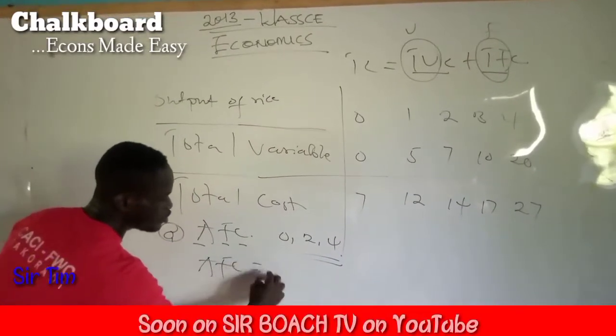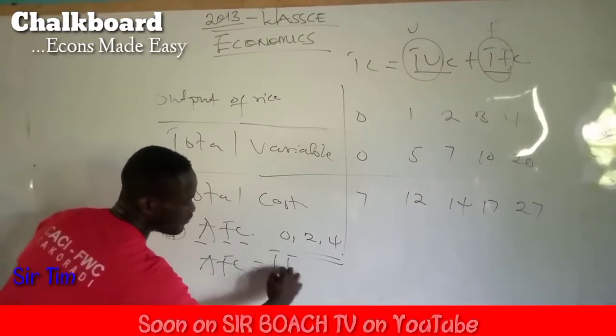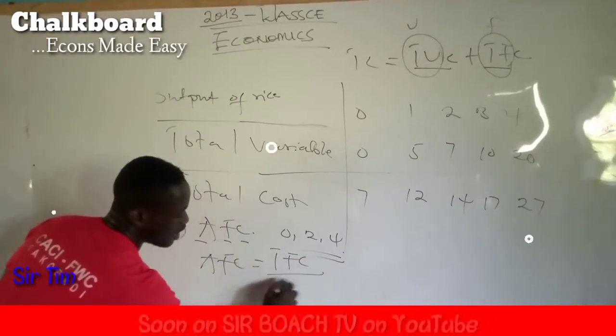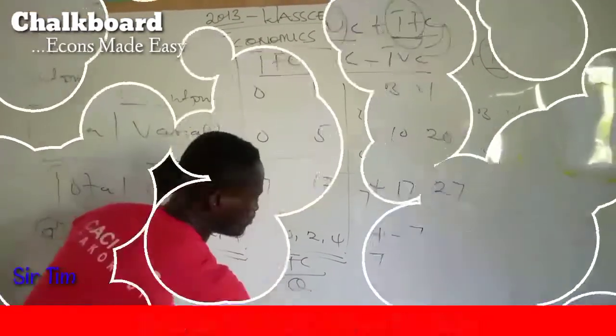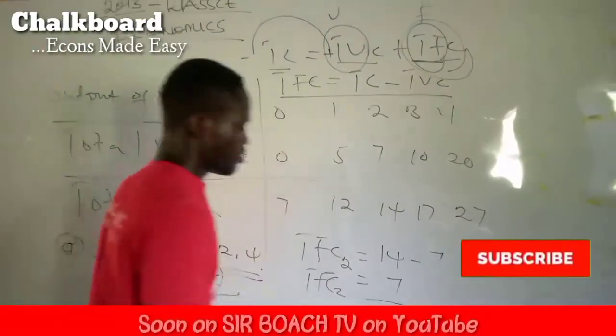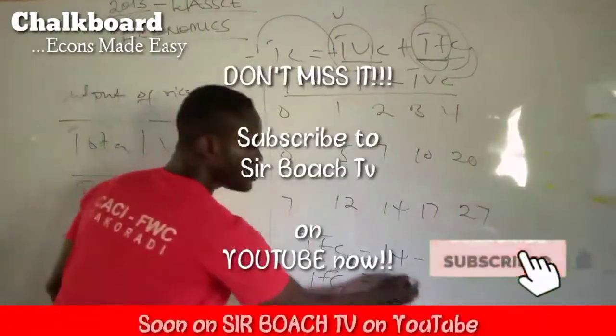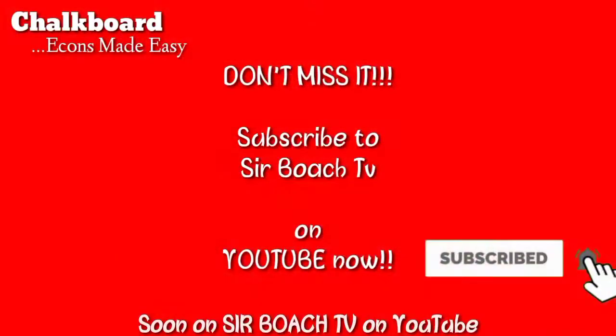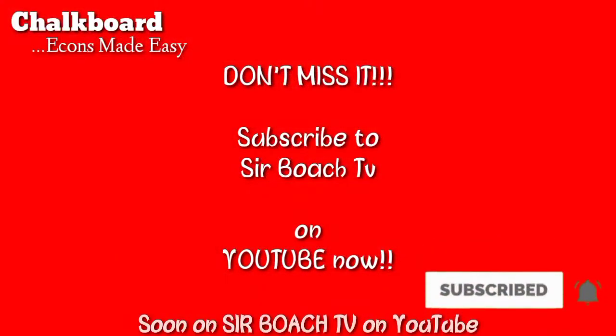AFC is equal to total fixed cost. Total variable cost at output of two is going to be seven. Now, we can use this to proceed.